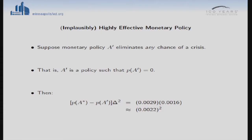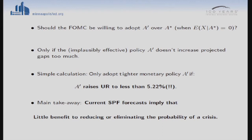Now suppose we had an implausible, utopian monetary policy that could actually eliminate any chance of a crisis — setting P of A-prime equal to zero. Going through the calculations, the key point is that the difference between P of A-star at 0.29% and P of A-prime at zero is very small. So you would only choose this tighter monetary policy if it raised your projected unemployment rate to less than 5.22%. You're willing to tolerate a very small increment in unemployment because the current Survey of Professional Forecasters says the probability of having such a tail event in the unemployment rate is so small — going as high as four percentage points has only a 0.29% chance.